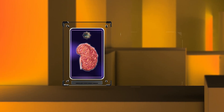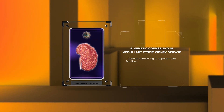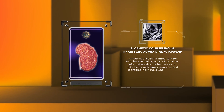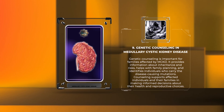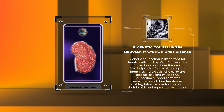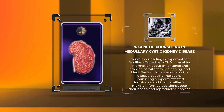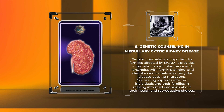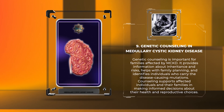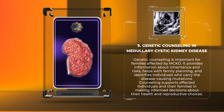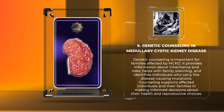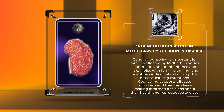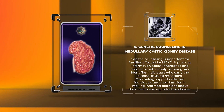Genetic counseling is important for families affected by MCKD. It provides information about inheritance and risks, helps with family planning, and identifies individuals who carry the disease-causing mutations. Counseling supports affected individuals and their families in making informed decisions about their health and reproductive choices.